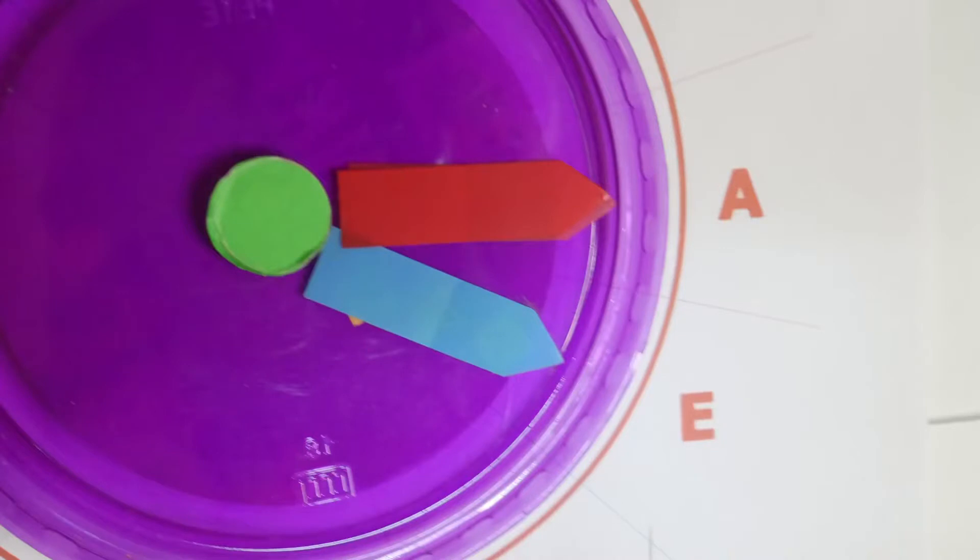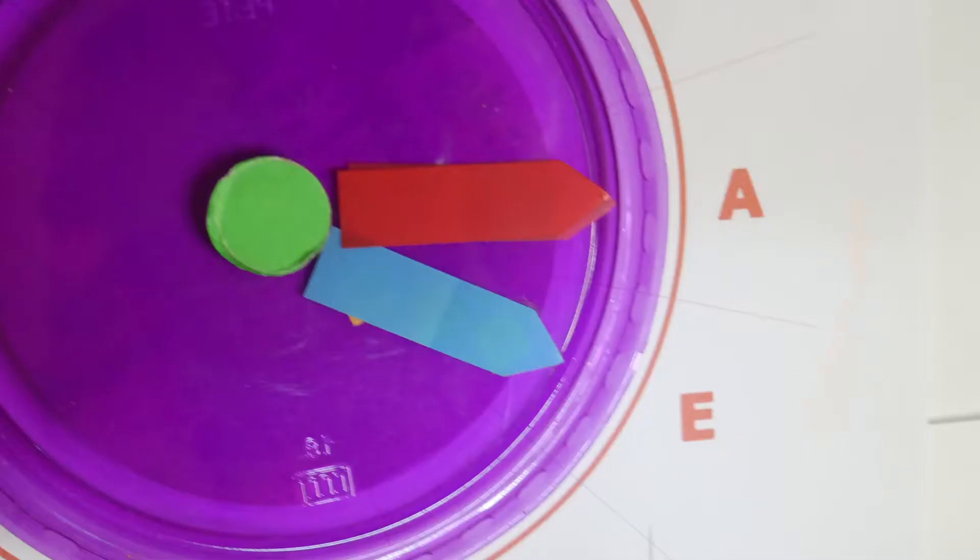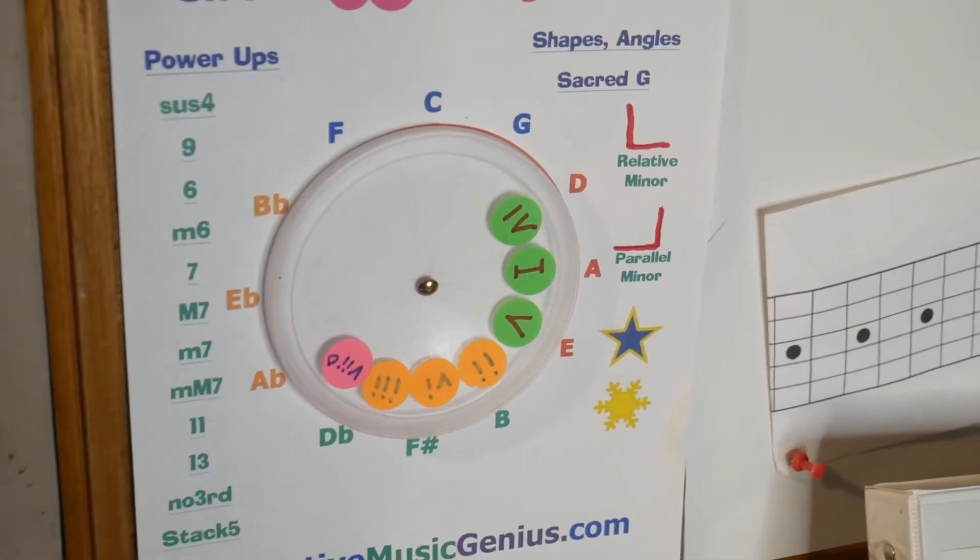So we're picking A power chord today. A power chord, which a lot of times you'll see in sheet music or in a chord chart, it'll be A5, stands for A power chord - the root and the fifth. And so if you look at the circle of fifths, you find A, and you go just right next door, one in the clockwise direction, and we've got E. So those are our two notes to the A power chord: A and E.